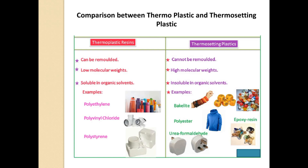Thermoplastics have low molecular weight, while thermosetting plastics have high molecular weight. Thermoplastics are soluble in organic solvents, whereas thermosetting plastics are insoluble in organic solvents. Examples of thermoplastics: polyethylene, polyvinyl chloride, polystyrene. Examples of thermosetting plastics: bakelite, polyester, urea formaldehyde.